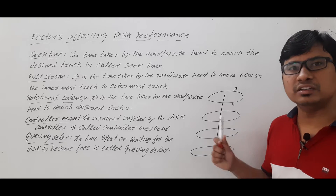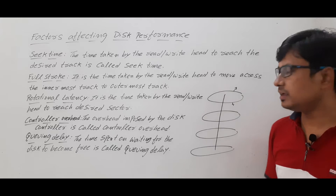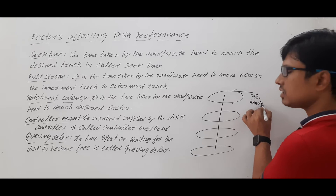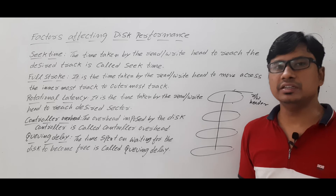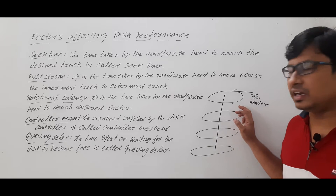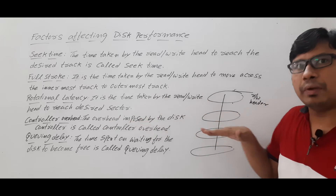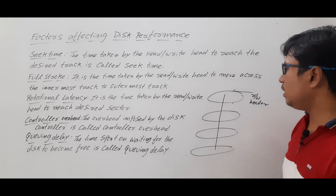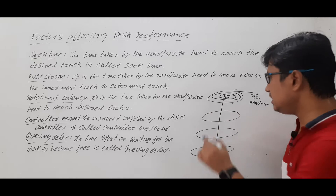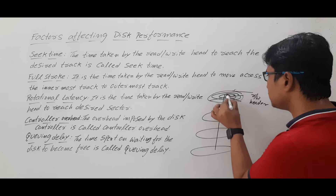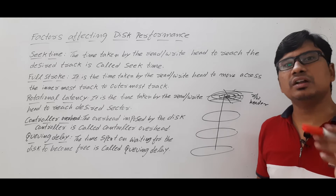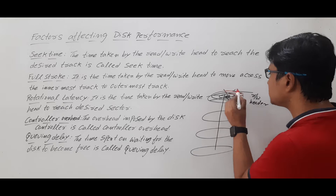In this example we have considered four platters, so there will be eight surfaces in total. Each surface has a read-write header, whose purpose is to read information from the disk or write information into the disk. The read-write header can move in the forward direction or backward direction only. Each platter is further divided into tracks, and each track is further divided into sectors. So the read-write header has to go to the corresponding sector to read or write information.